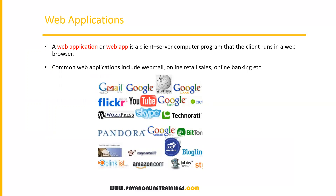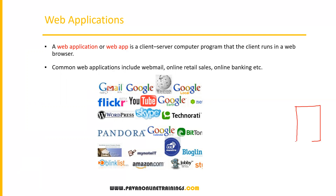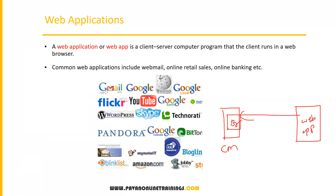First, what is a web application? A web application is a client-server computing program that the client runs in a web browser. For example, let's say I have a server machine which is remotely located where my web application is installed. I can access this application through a client machine using a browser, which can send a request or URL and get information from the server.